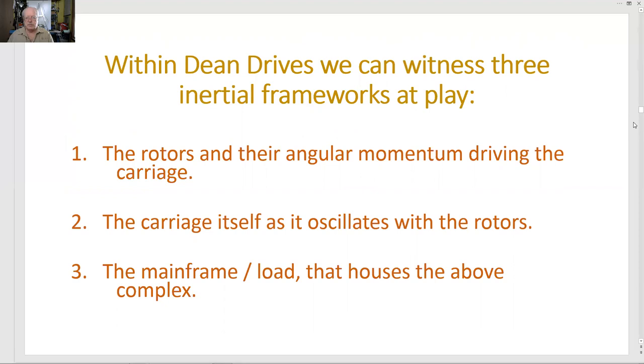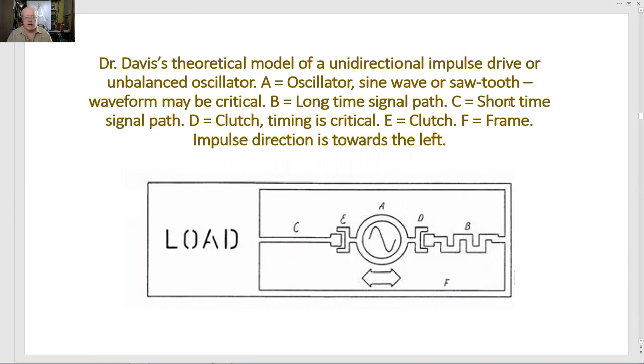Within Dean drives, we can witness three inertial frameworks at play. One, the rotors and their angular momentum driving the carriage. Two, the carriage itself as it oscillates with the rotors. Three, the mainframe load that houses the above complex. Dr. Davis's theoretical model of a unidirectional impulse drive or unbalanced oscillator. A, the oscillator, sine wave or sawtooth waveform may be critical. A is also what we call the carriage. B, long time signal path. C, short time signal path. D, clutch, timing is critical. E is clutch. F is a frame. Impulse direction is towards the left.